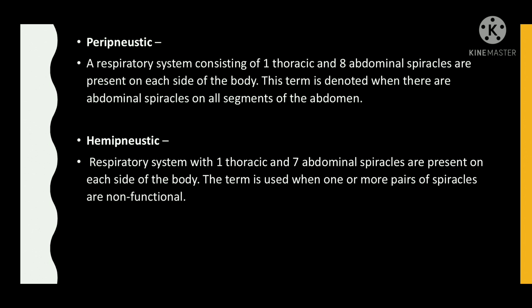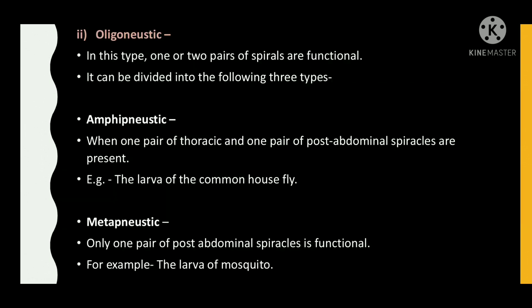Hemipneustic — respiratory system with 1 thoracic and 7 abdominal spiracles present on each side of the body; the term is used when 1 or more pairs of spiracles are non-functional. Oligopneustic — in this type, only 1 or 2 pairs of spiracles are functional; it can be divided into the following 3 types: Amphipneustic — when 1 pair of thoracic and 1 pair of post-abdominal spiracles are present, for example the larva of the common house fly. Metapneustic — only 1 pair of post-abdominal spiracles is functional, for example the larva of mosquito.